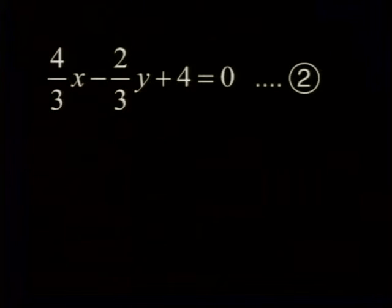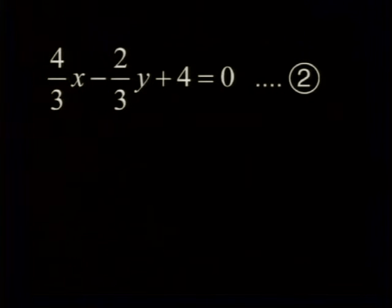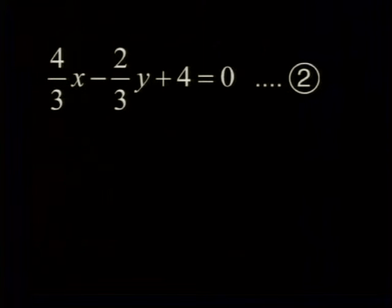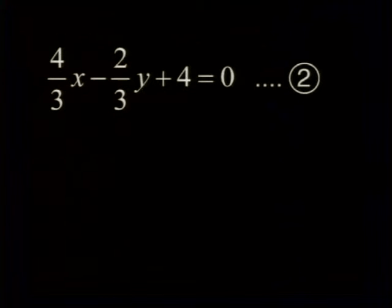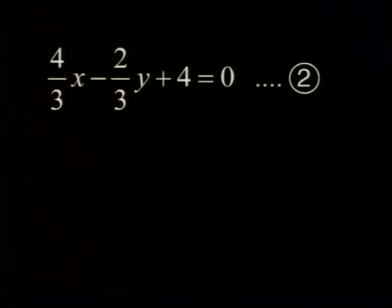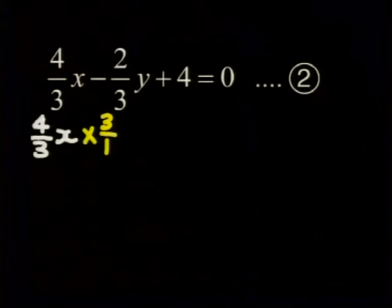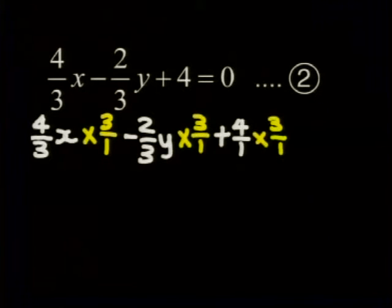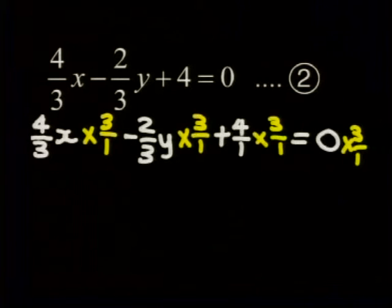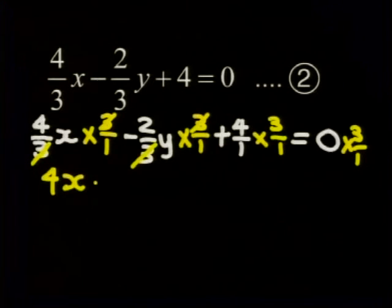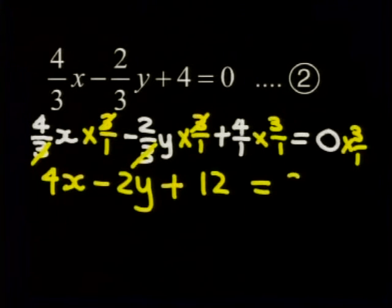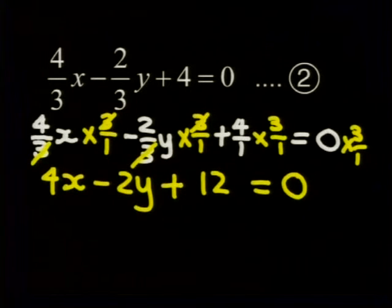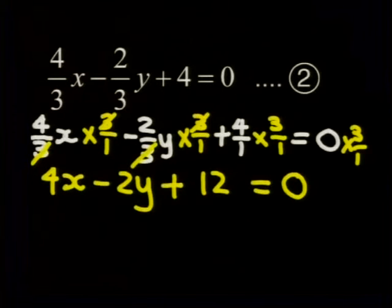We could substitute this value for y into equation 2 now. But have a look at it. I think we should do something about these denominators first. This will simplify the equation. To deal with the denominators of 3, we can multiply through by the lowest common denominator, which is 3 in this case. The equivalent equation that we have found is 4x minus 2y plus 12 equals 0. This looks much easier to work with.